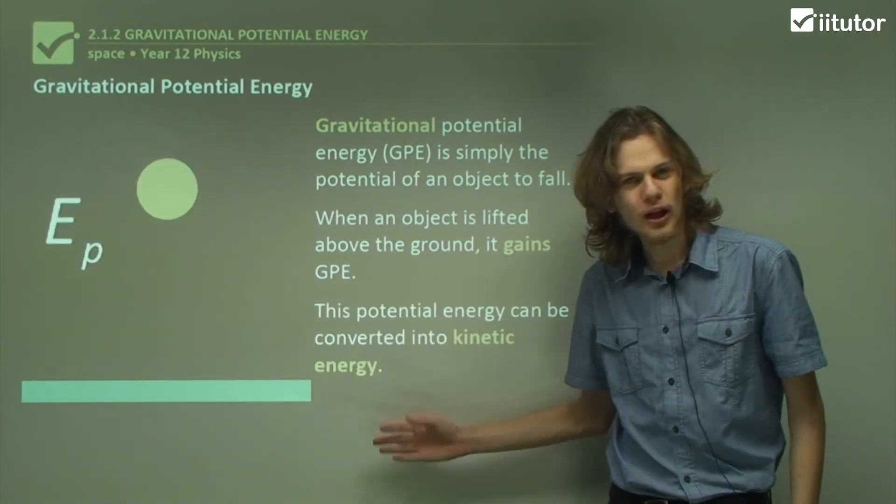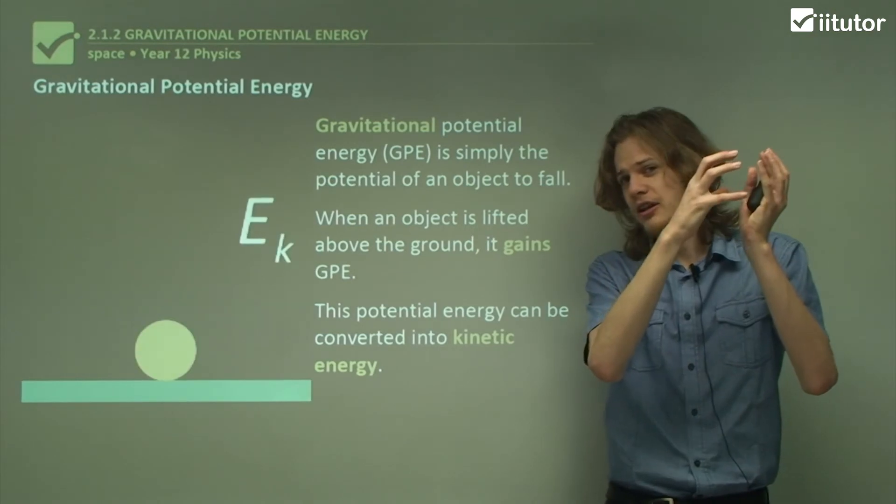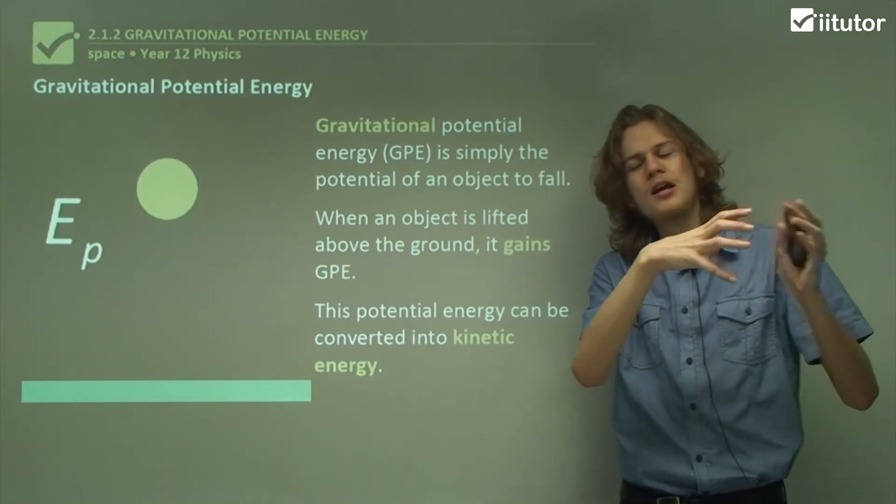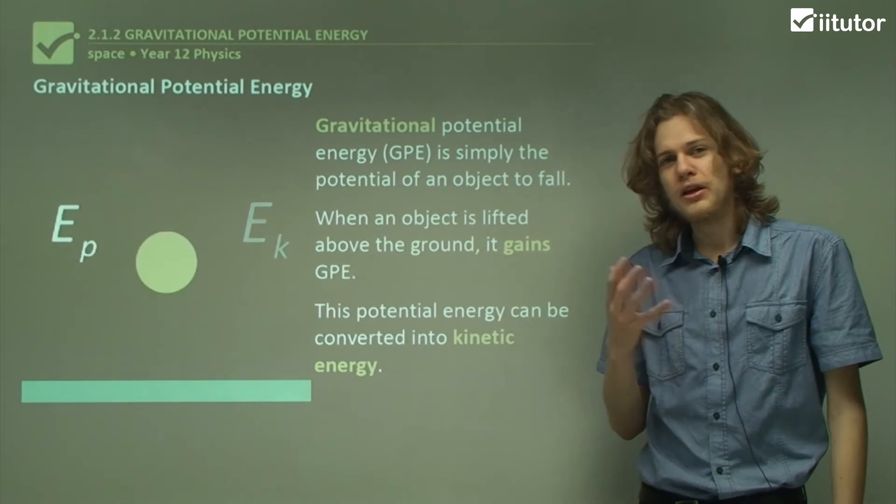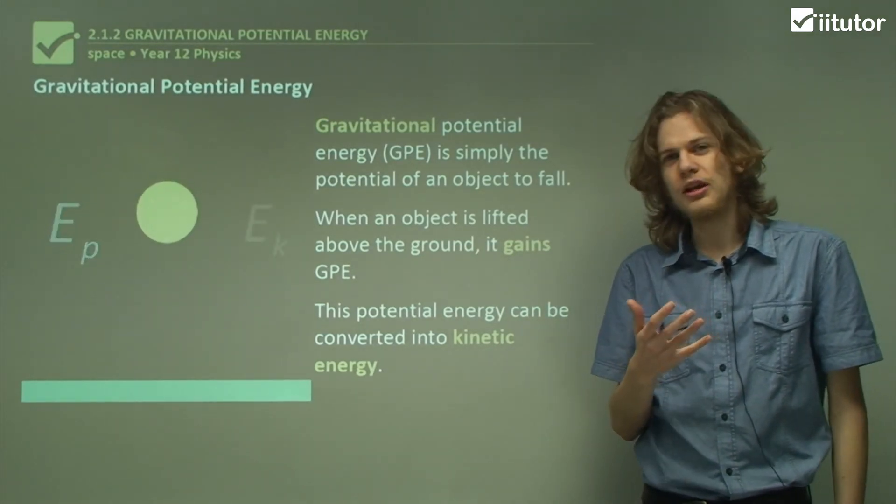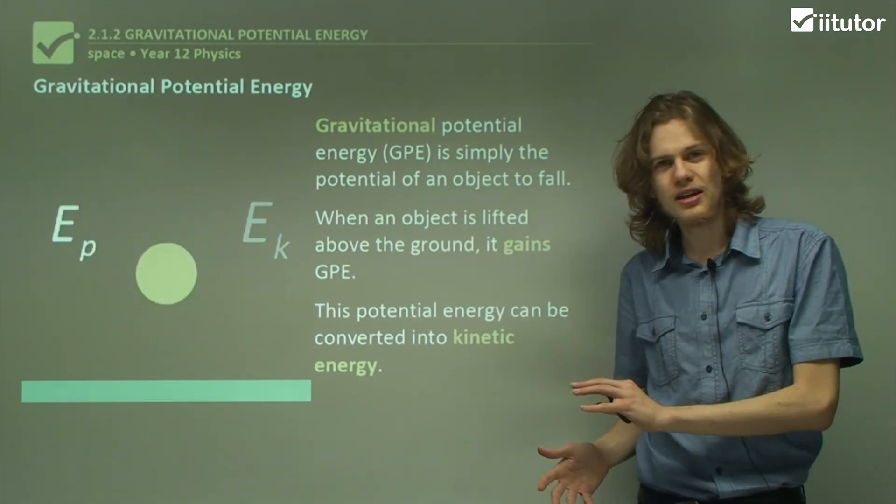And so when a ball does fall down, it's converting that potential energy that it has hanging in the air into kinetic energy. In doing so, it loses all of its potential energy as it transforms into kinetic energy.